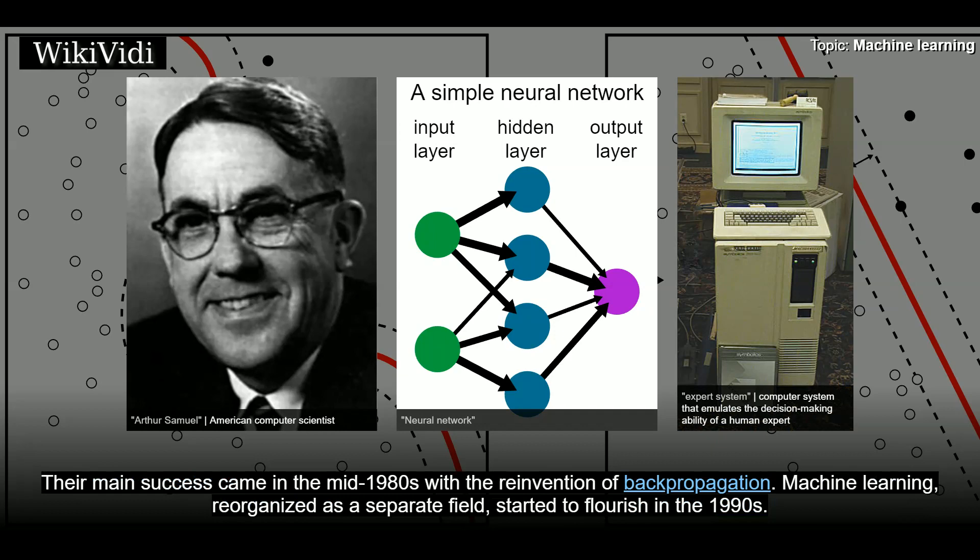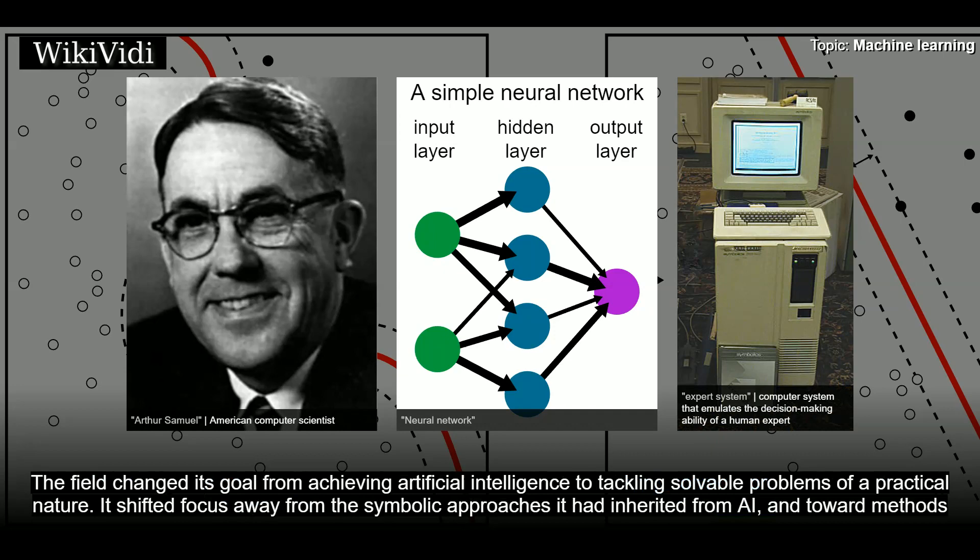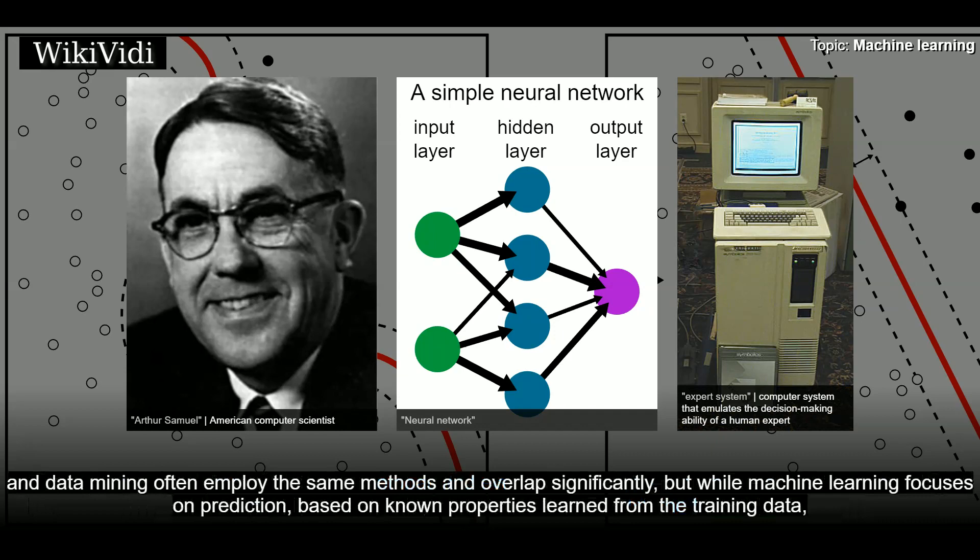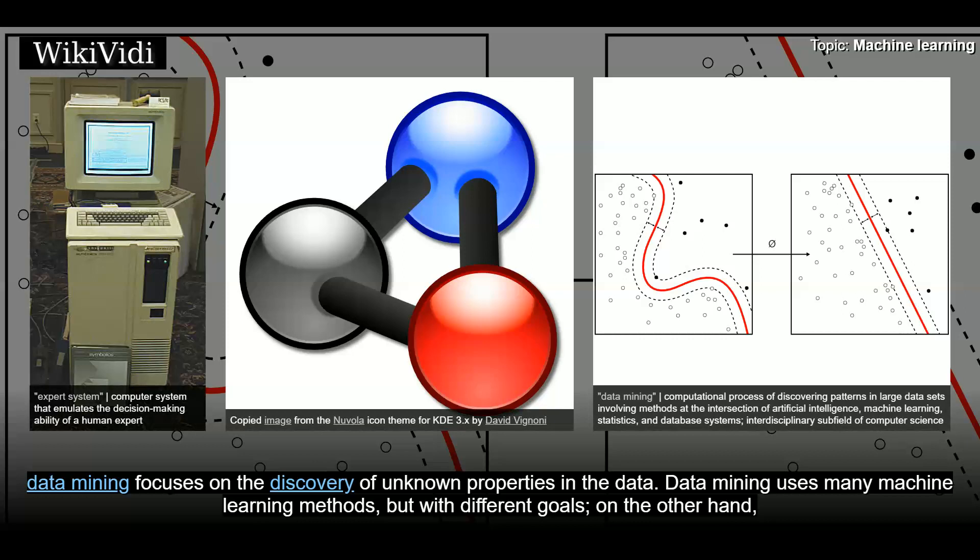Machine learning, reorganized as a separate field, started to flourish in the 1990s. The field changed its goal from achieving artificial intelligence to tackling solvable problems of a practical nature. It shifted focus away from the symbolic approaches it had inherited from AI, and toward methods and models borrowed from statistics and probability theory. It also benefited from the increasing availability of digitized information, and the ability to distribute it via the internet. Machine learning and data mining often employ the same methods and overlap significantly. But while machine learning focuses on prediction based on known properties learned from the training data, data mining focuses on the discovery of unknown properties in the data.